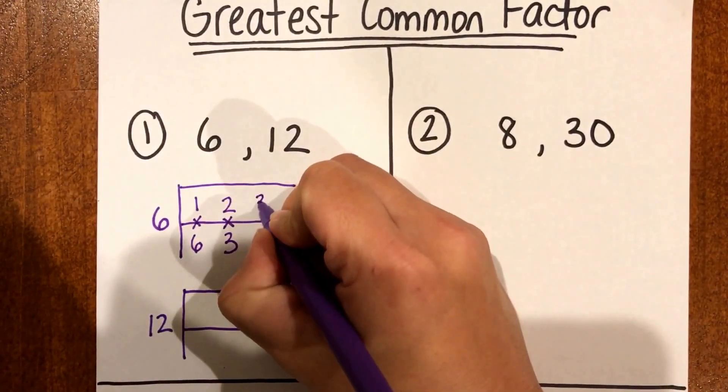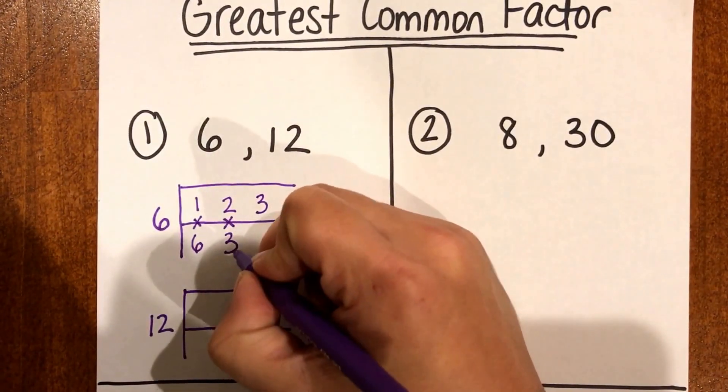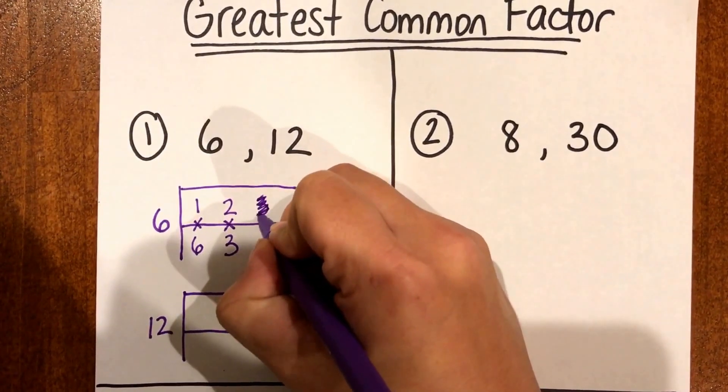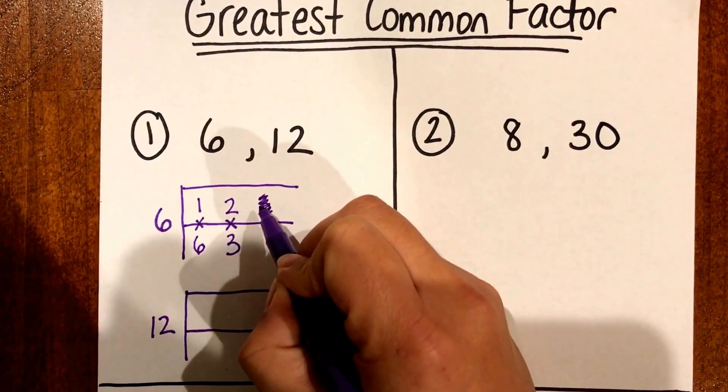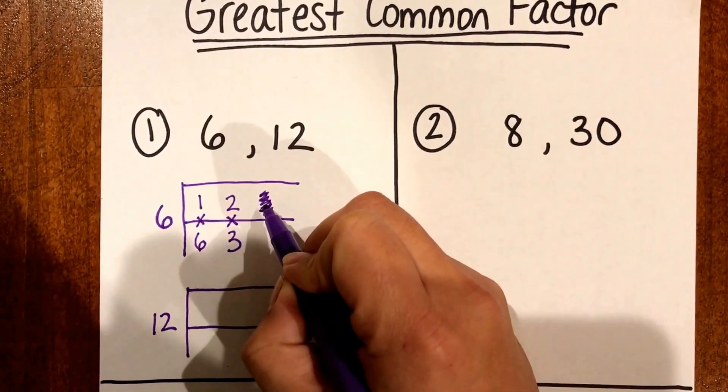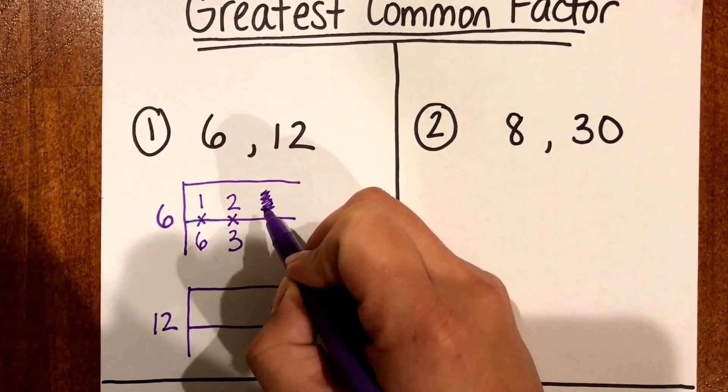Then I know that I can go to 3 but wait I already have a 3 here so I really don't need to keep going, I can stop there. So once you go up to the next number if you already have that number that you used in a previous fact then that means you can stop.